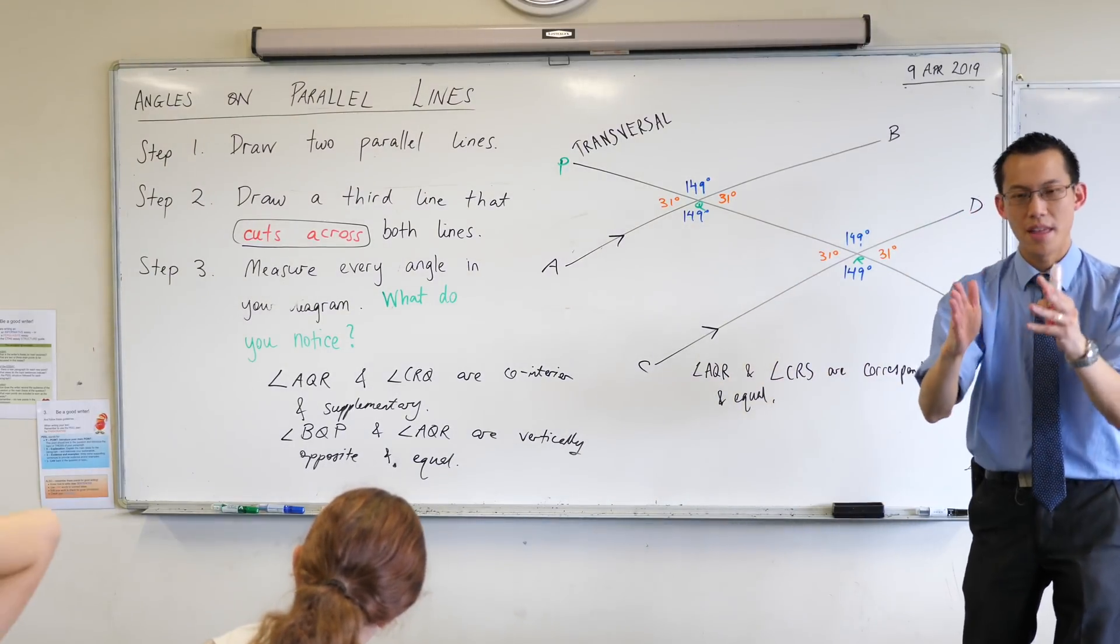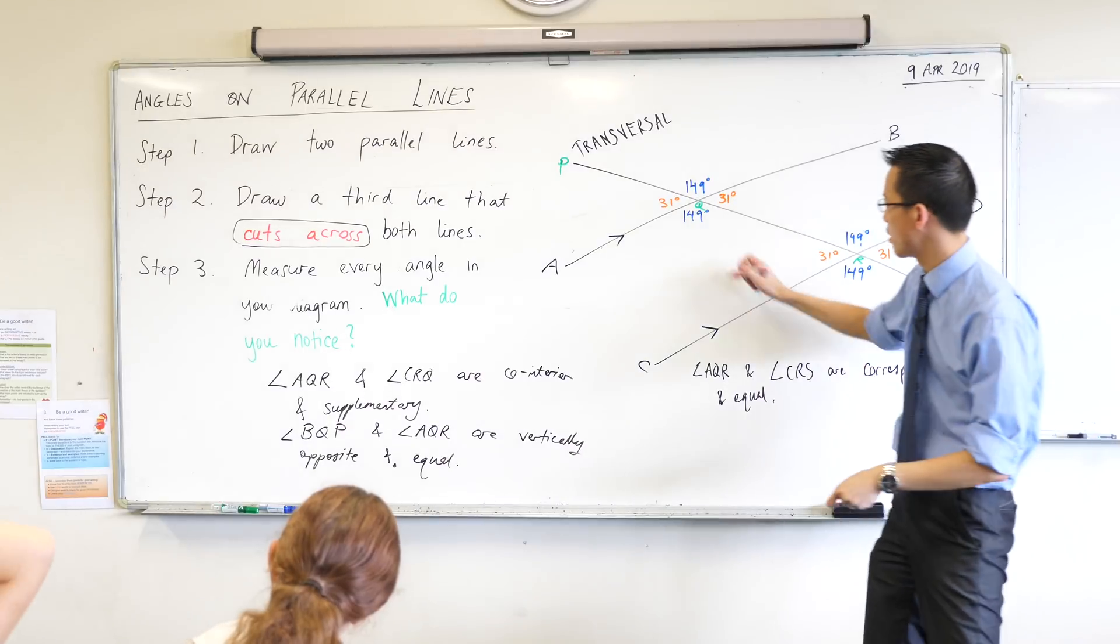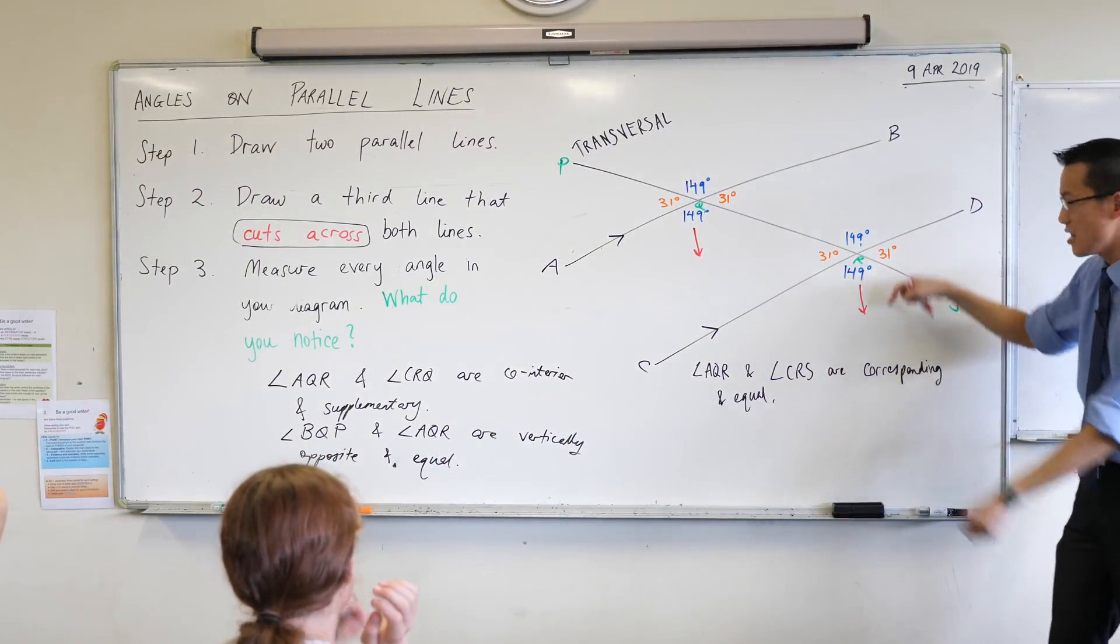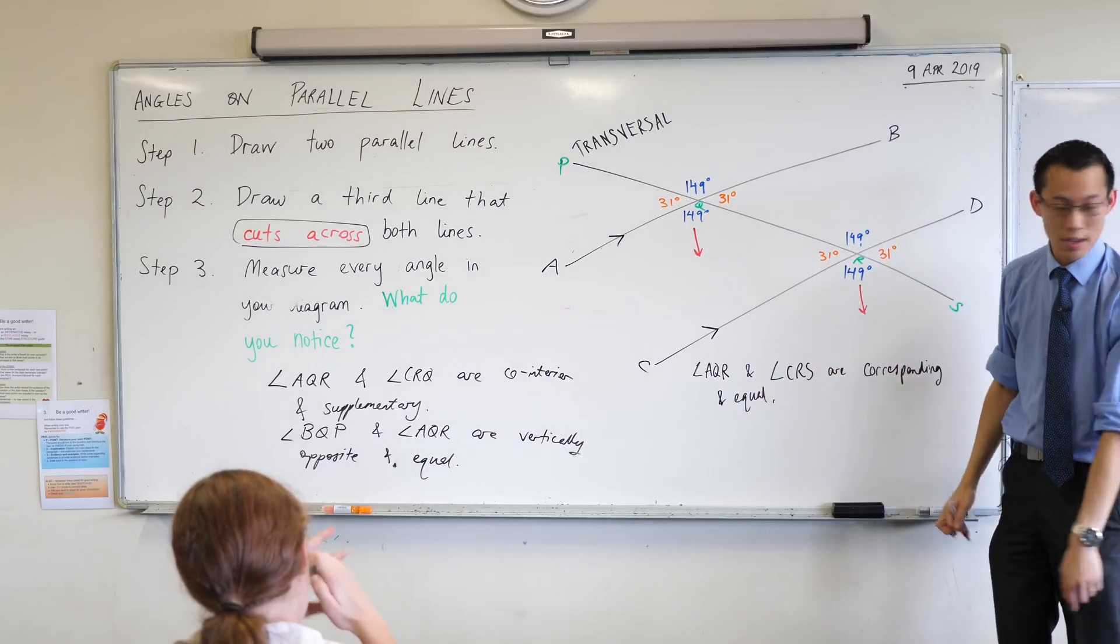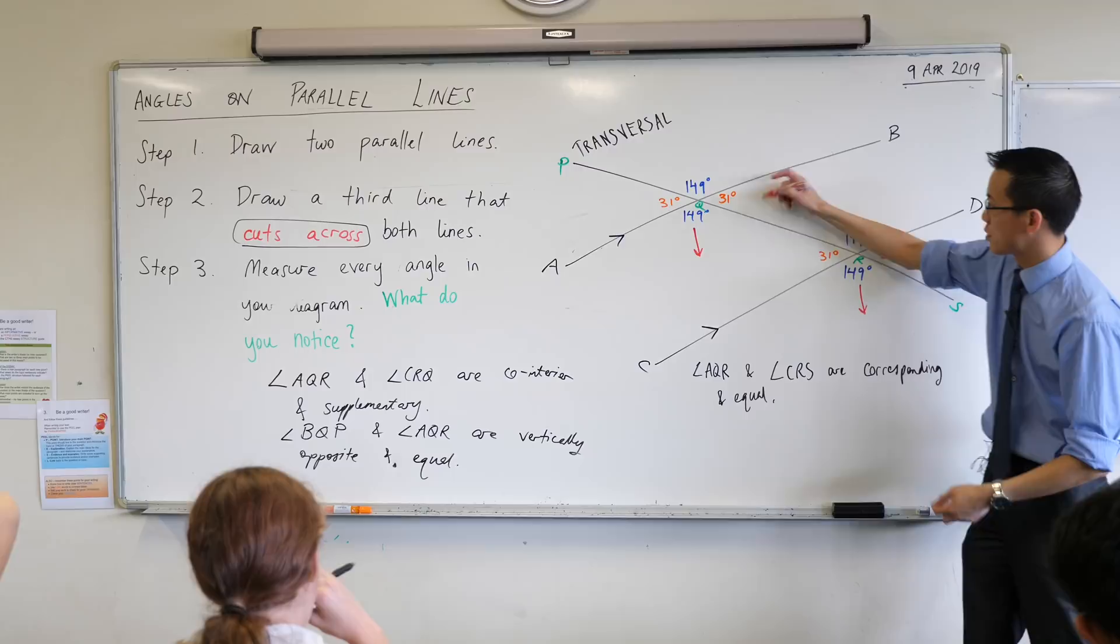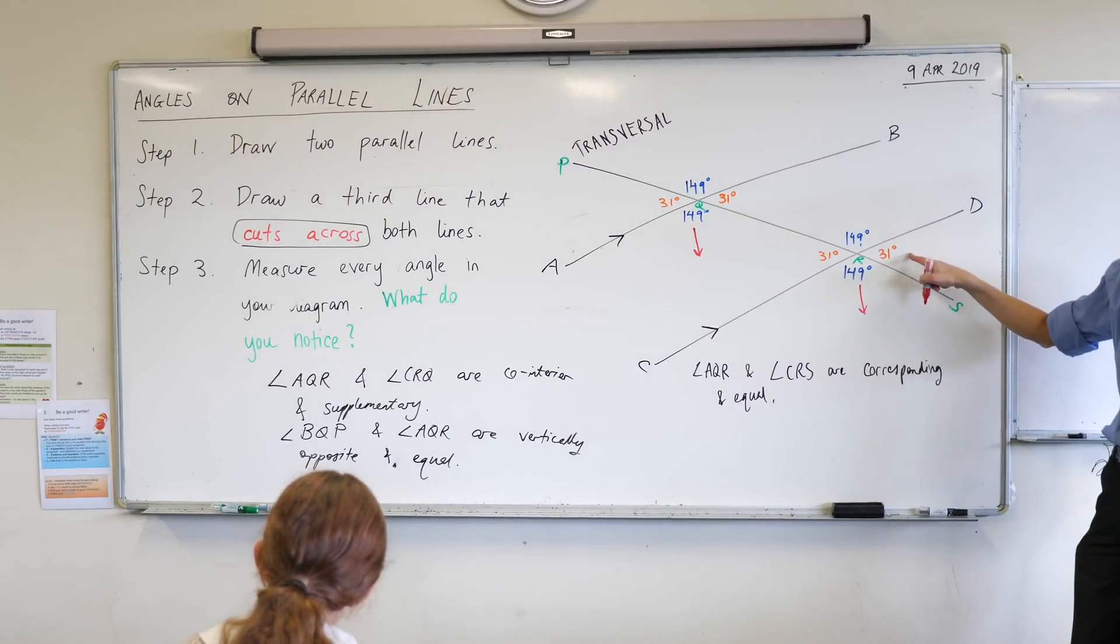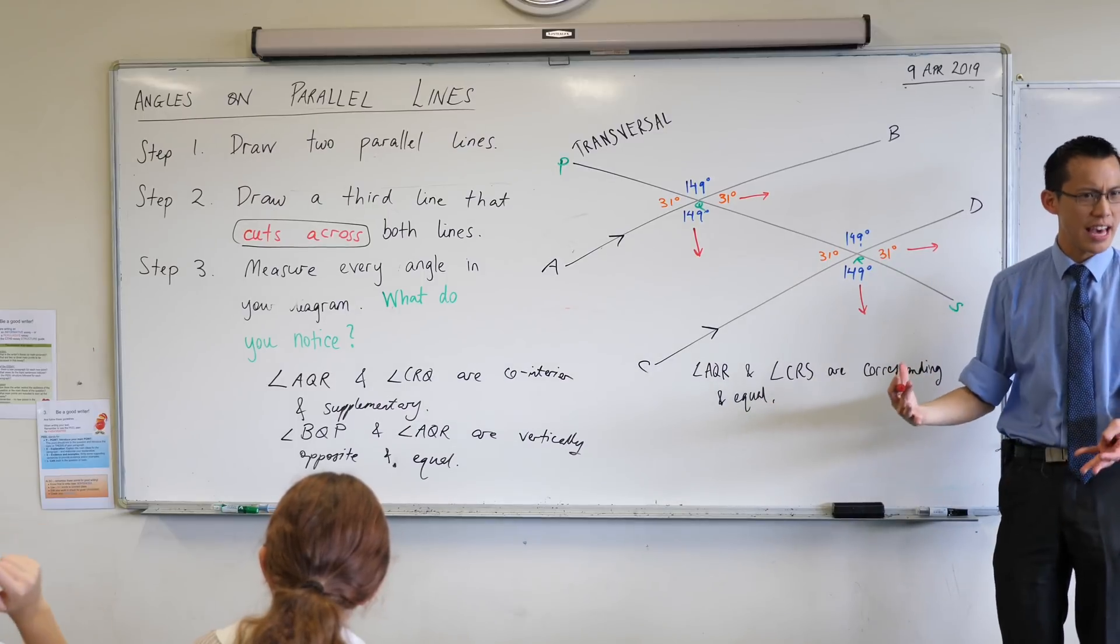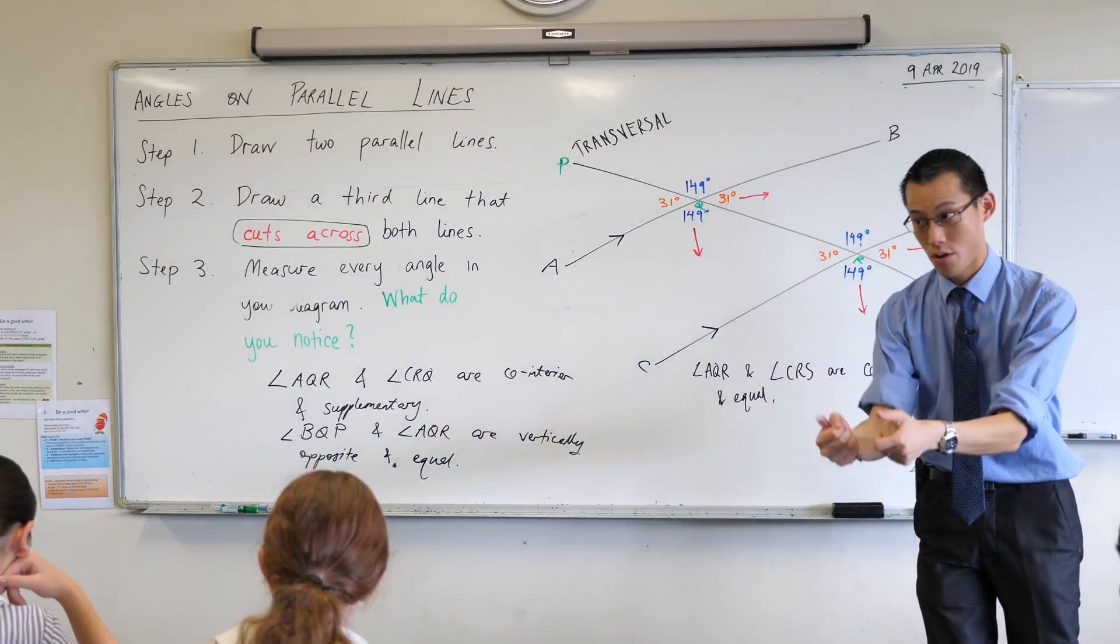Corresponding angles, they face in the same direction, right? So if you look at these AQR, and here's CRS, you see they're facing downwards, as it were, facing the same direction. The other pairs that you mentioned, for example, see this 31, and this 31, right? They are facing in the same direction, do you notice that? That's what makes them correspond.